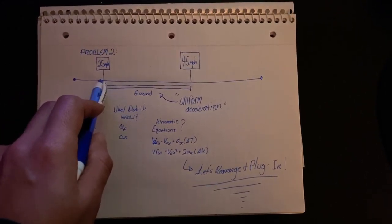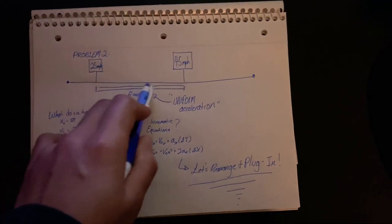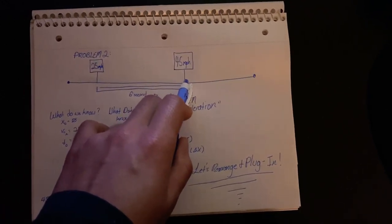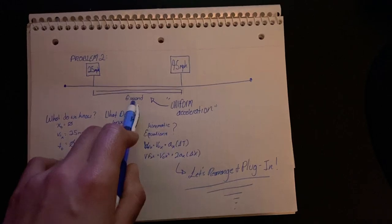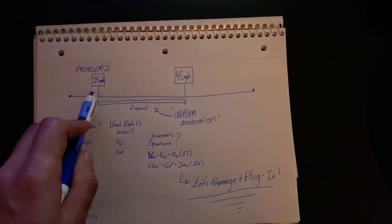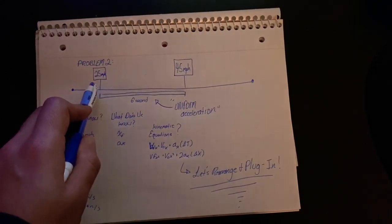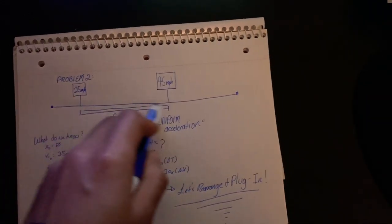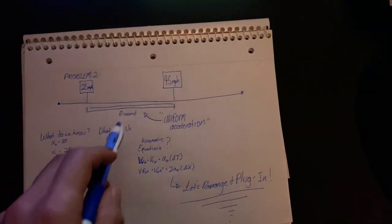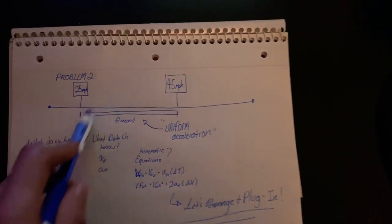Once she reaches this position, from here on out she accelerates at a constant rate until she reaches 45 miles per hour. It takes her approximately six seconds to reach that 45 mile per hour mark when she started at the 25 mile per hour mark, because she's in that new speed zone in this area. So now she wants to reach this speed limit in the speed zone. What information do we know?